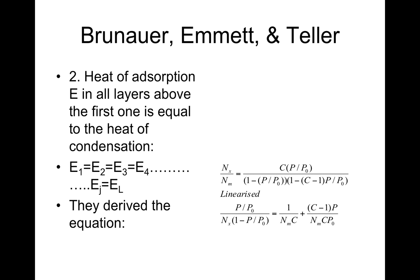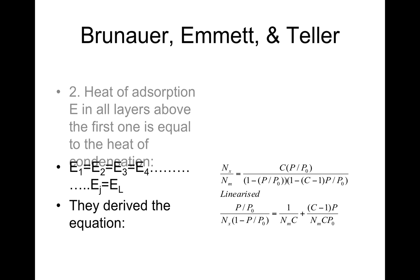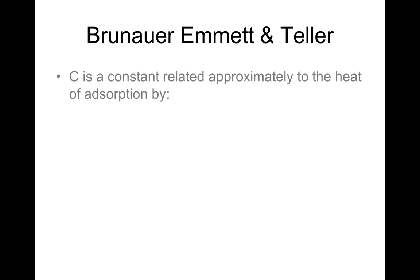The BET equation is: nx over nm equals C times (P/P0) divided by (1 minus P/P0) times (1 minus (C minus 1) times P/P0). The constant C is related approximately to the heat of adsorption by C equals exponential of (E1 minus El) over RT.